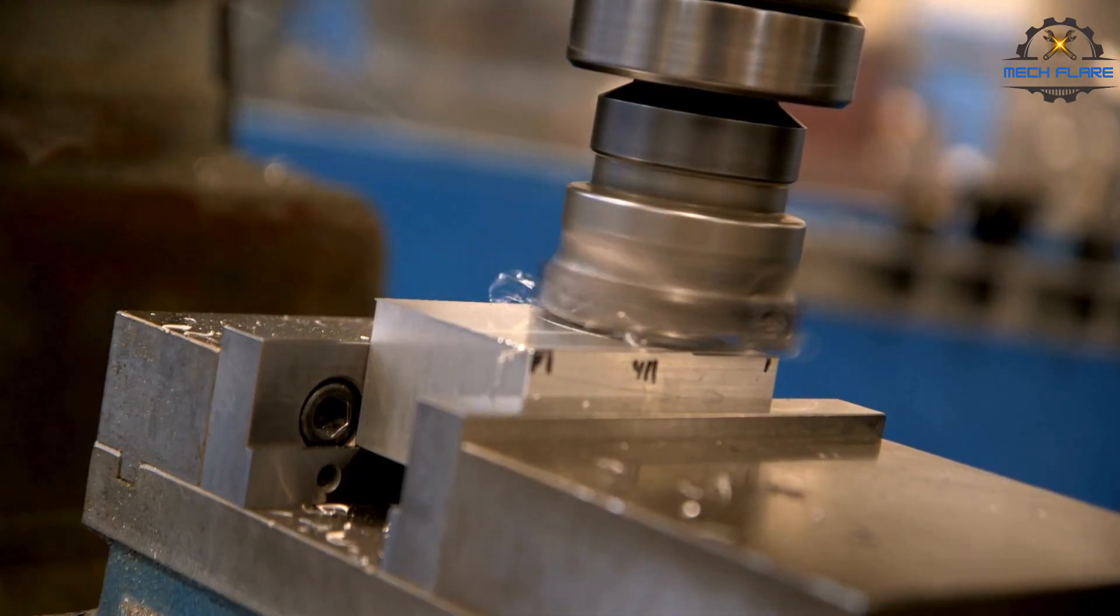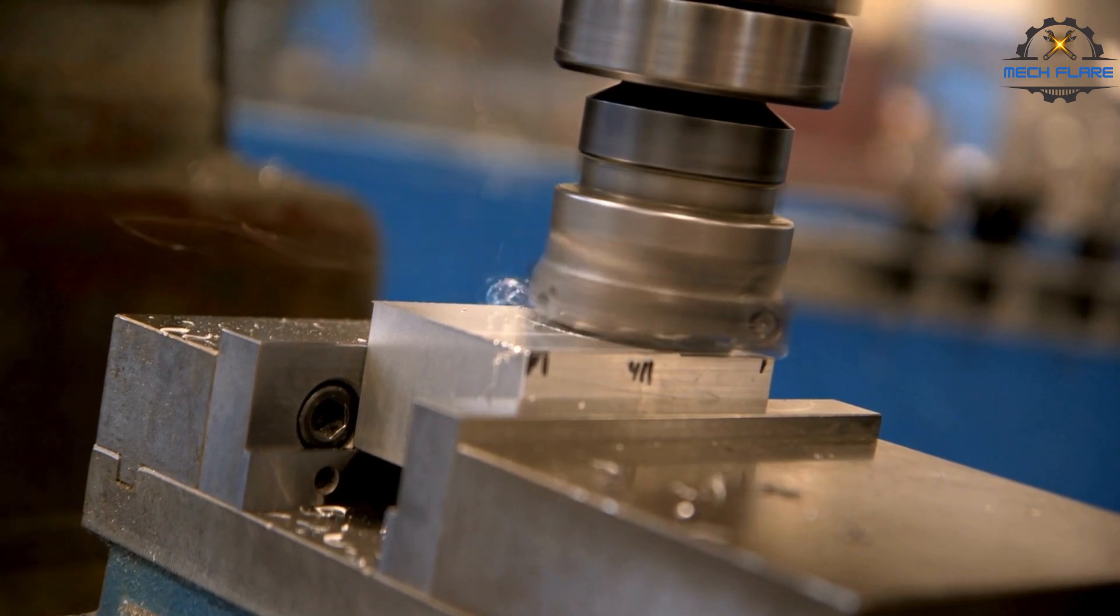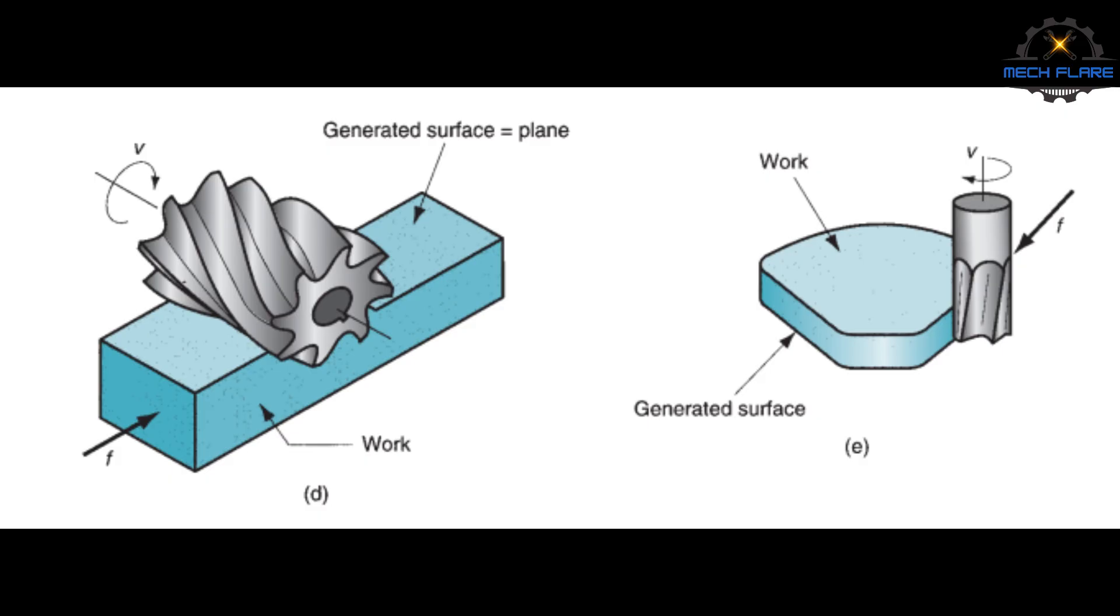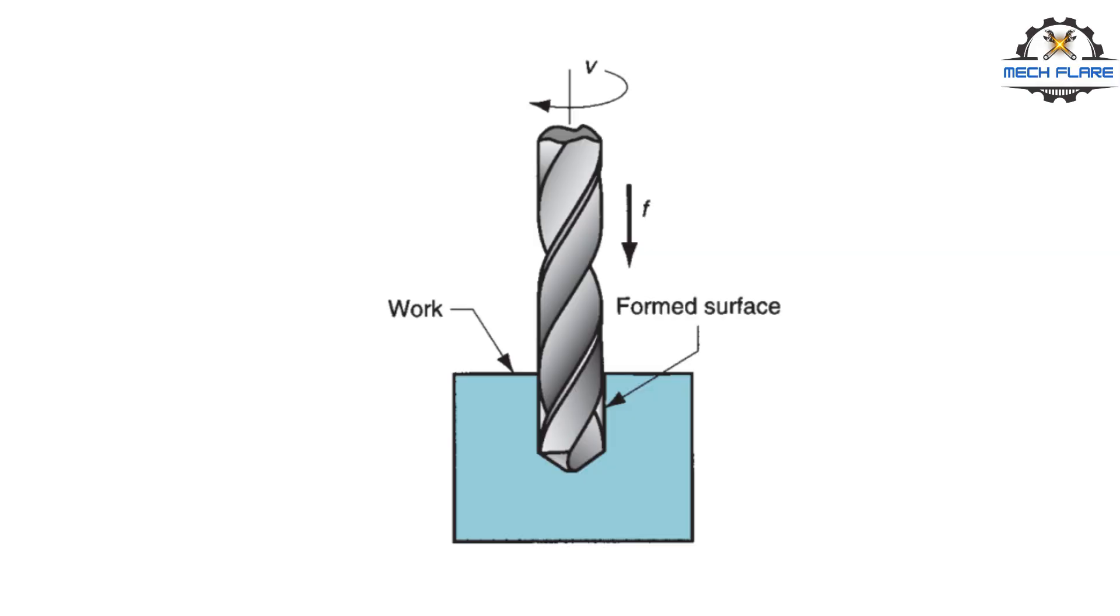The axis of rotation of the cutting tool is perpendicular to the direction of feed. This orientation between the tool axis and the feed direction is one of the features that distinguishes milling from drilling. In drilling, the cutting tool is fed in a direction parallel to its axis of rotation.